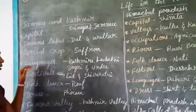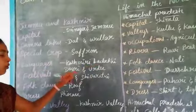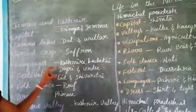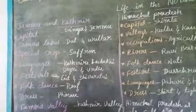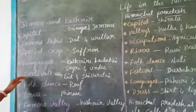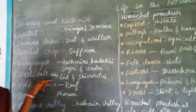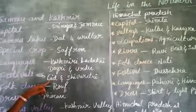Languages spoken in Jammu and Kashmir are Kashmiri, Ladakhi, Dogri, and Urdu. These are the languages spoken in Jammu and Kashmir.